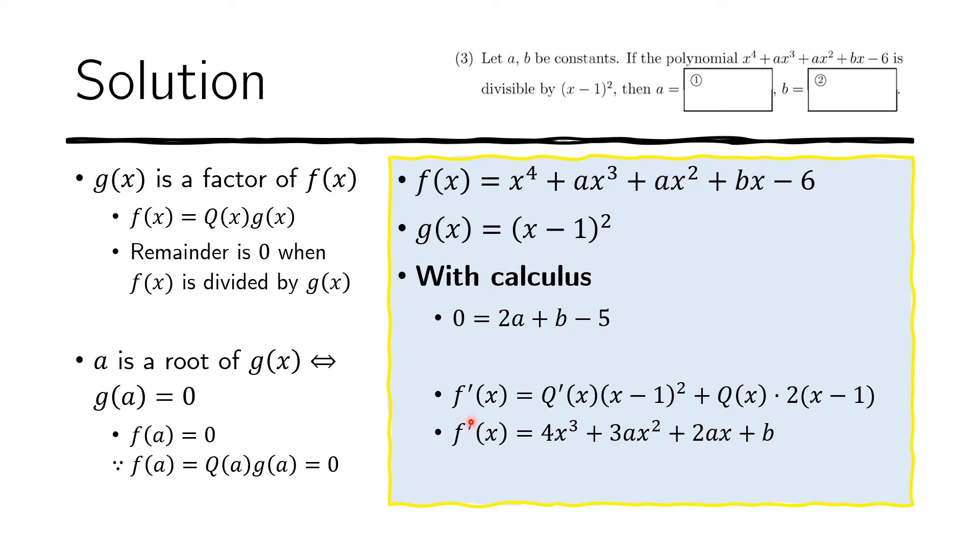F prime of X—first here, what I did here. So the first one here is just differentiation of this. The second one here is a differentiation of this. So if you do F prime X here, we get this expression: 4X cubed, 3AX squared, 2AX plus B. And now these are both F prime X. So we can equate them. And again,